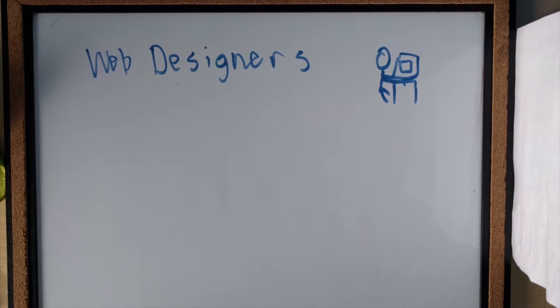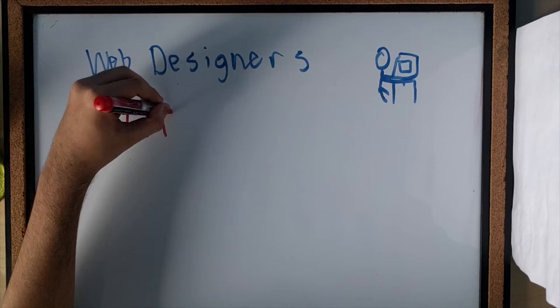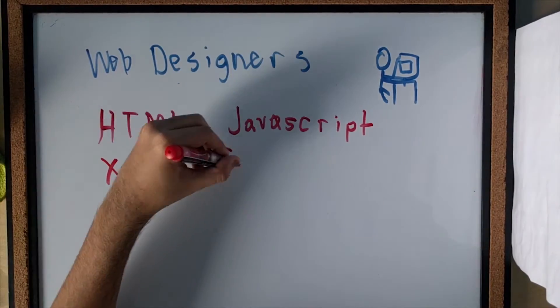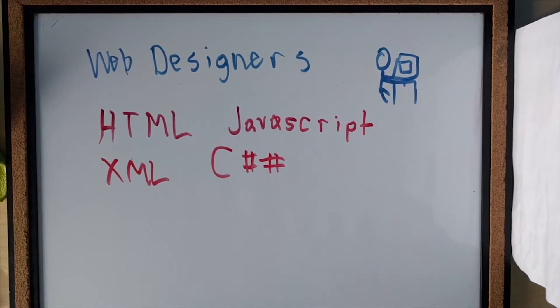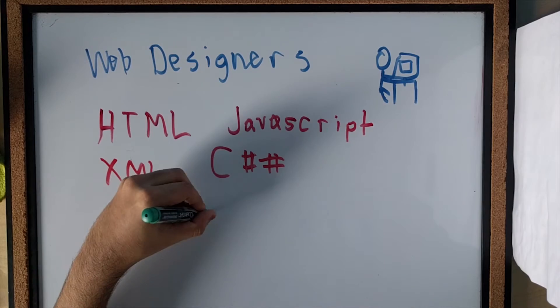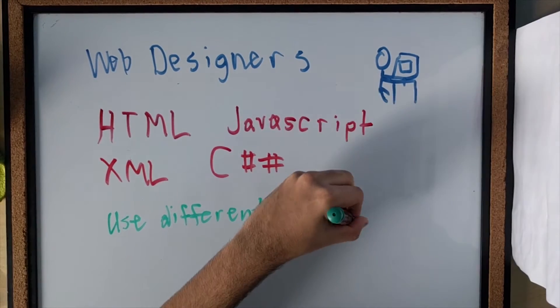The code can be written in many different languages. Some popular languages are HTML, JavaScript, XML, and C Sharp. What is the difference between these languages? Like our spoken languages, different programming languages use different words and symbols to tell the computer to do different things.